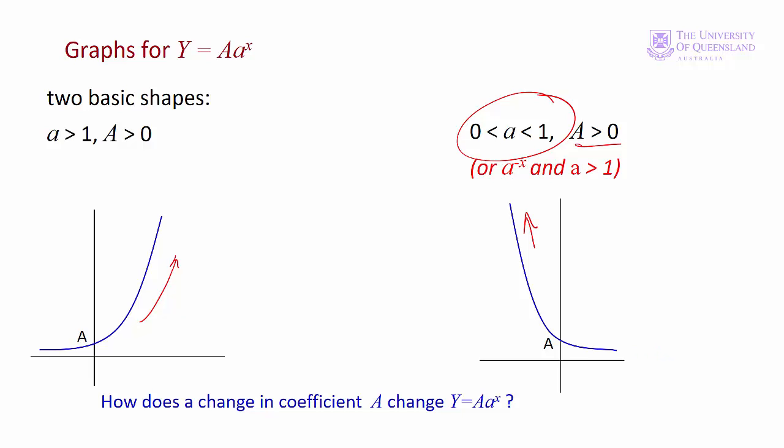In both cases the x-axis is an asymptote for the function. In the first case as x tends to minus infinity and in the second case as x approaches plus infinity.